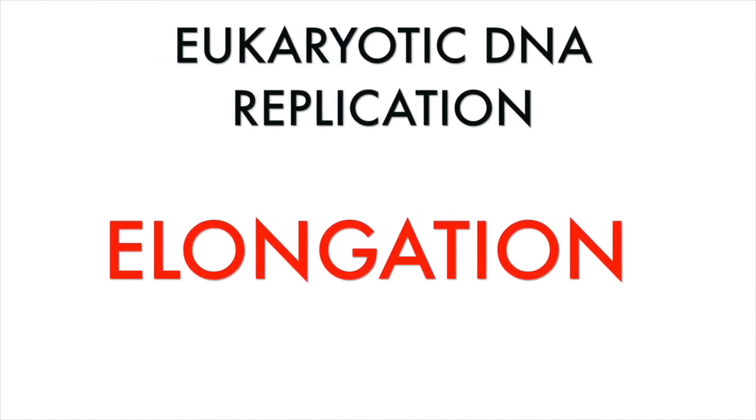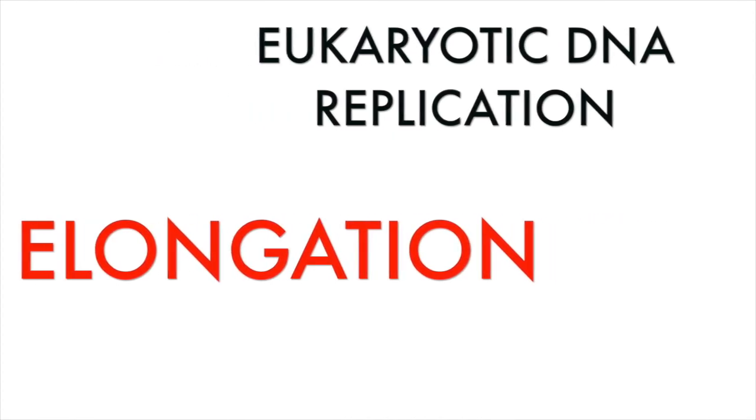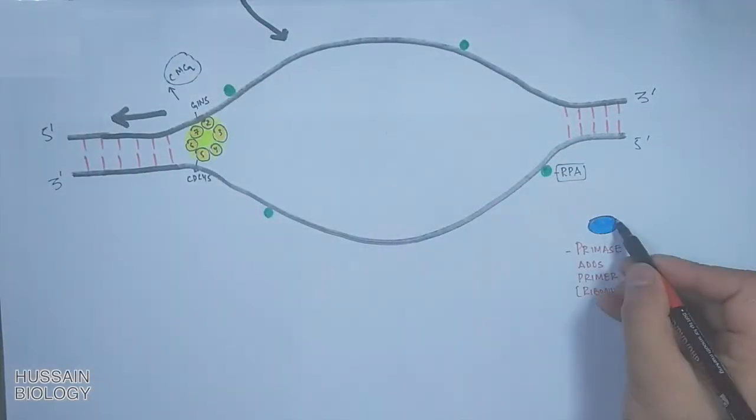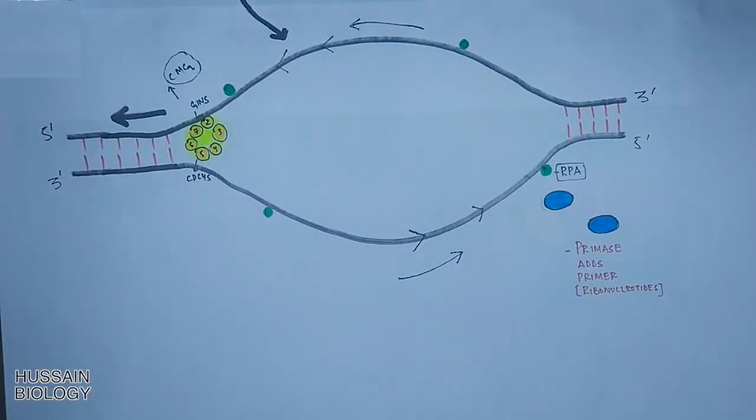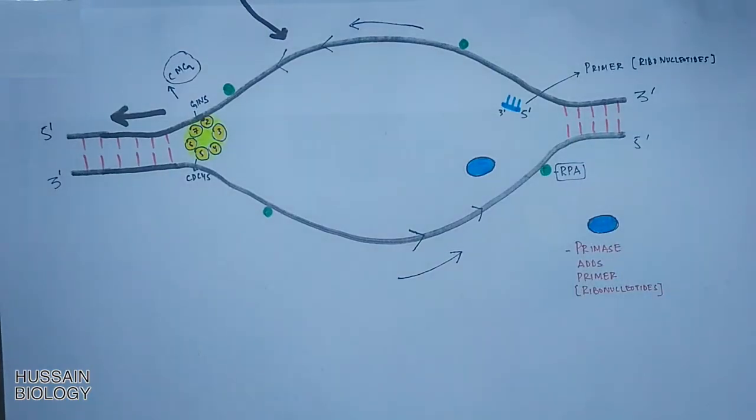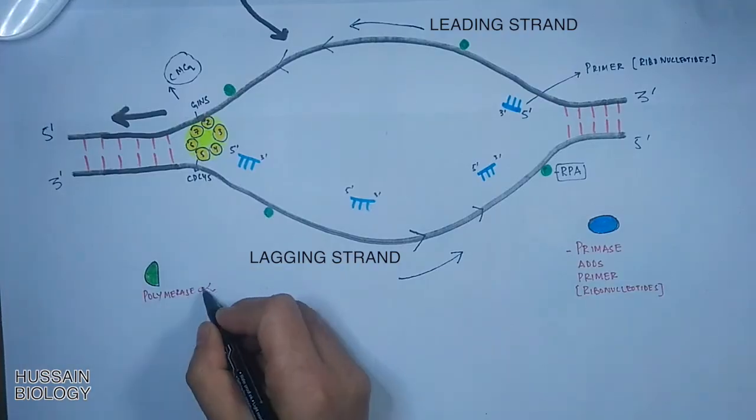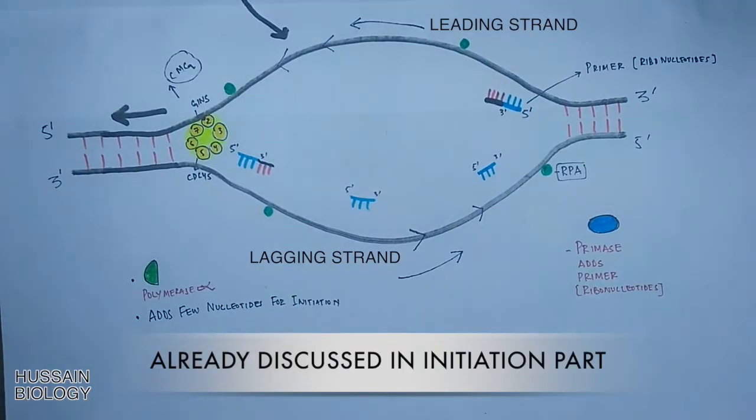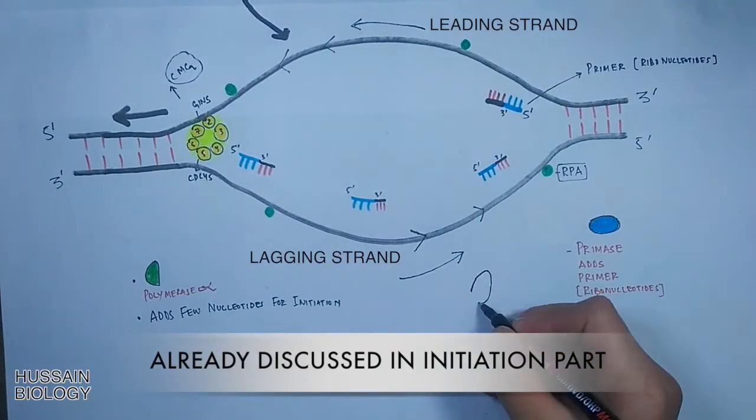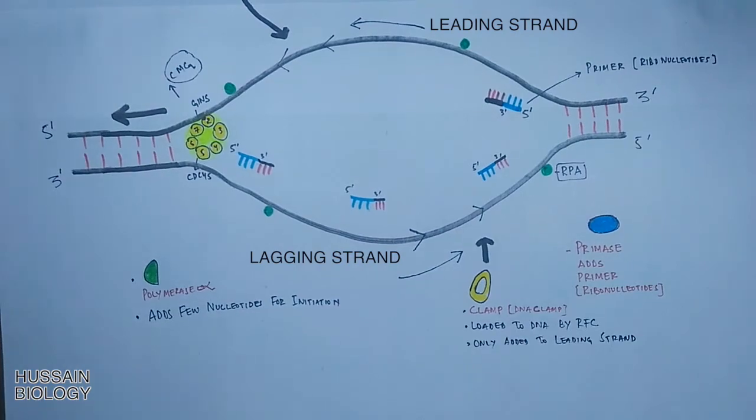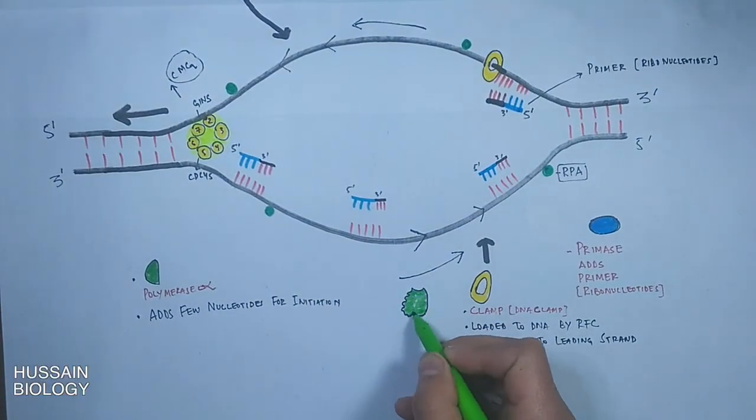Before we get into the elongation part, let's see where we are at the end of initiation. At the end of initiation, the primase enzyme loads primers on both strands, then the primers are extended a bit by adding deoxynucleotides by polymerase alpha as shown in the diagram. And finally the PCNA, that is the DNA clamp, loads the DNA polymerase delta to both the strands.